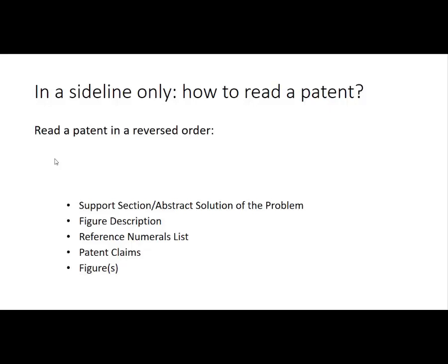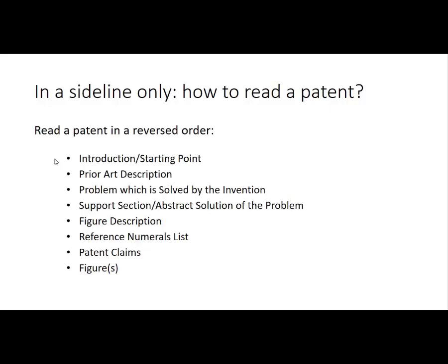Then I would read the introduction and the starting point, the prior art description and the problem which is solved by the invention. This is not very helpful but you do it for the sake of good order. And finally, the abstract doesn't contribute anything to the description but it is there. So, this is how I would read and draft a patent application.